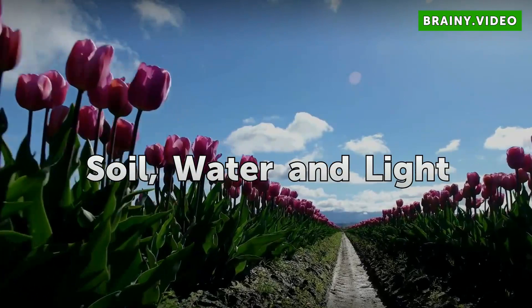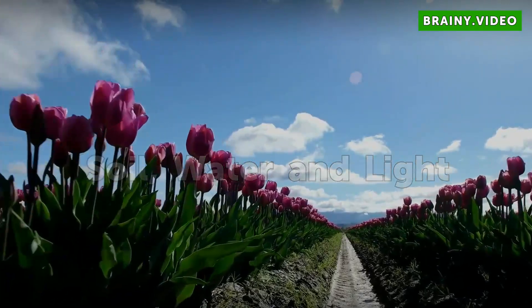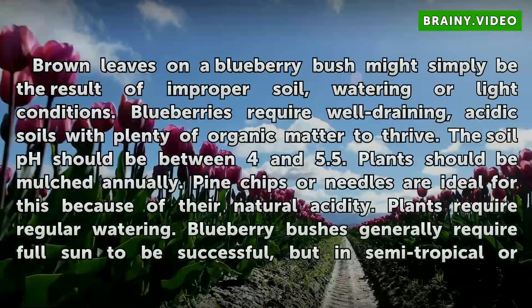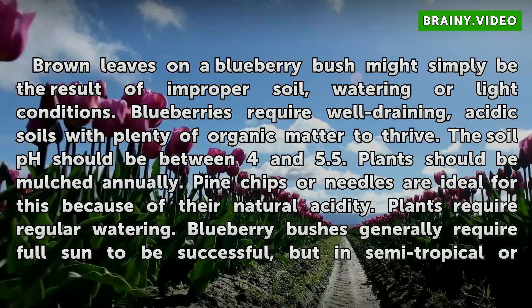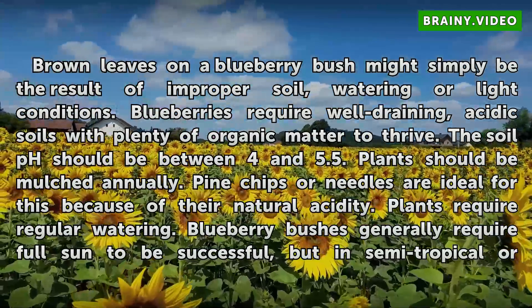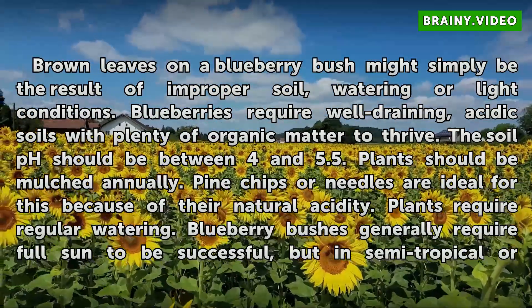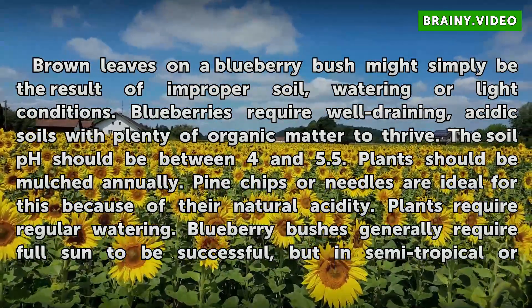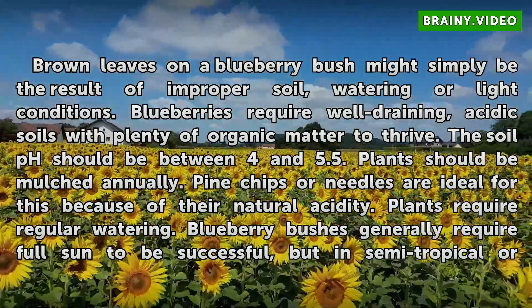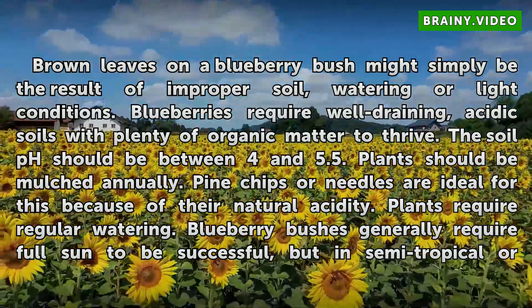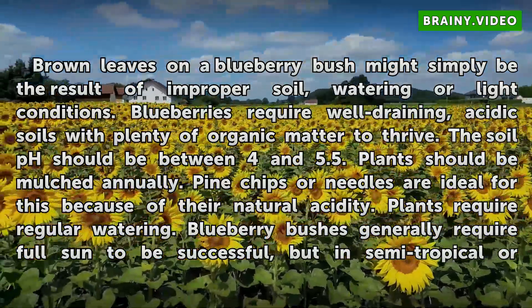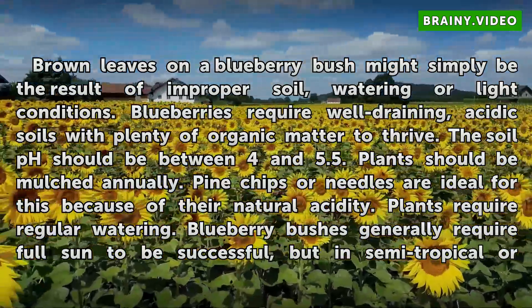Soil, water, and light. Brown leaves on a blueberry bush might simply be the result of improper soil, watering, or light conditions. Blueberries require well-draining, acidic soils with plenty of organic matter to thrive. The soil pH should be between 4 and 5.5. Plants should be mulched annually. Pine chips or needles are ideal for this because of their natural acidity.